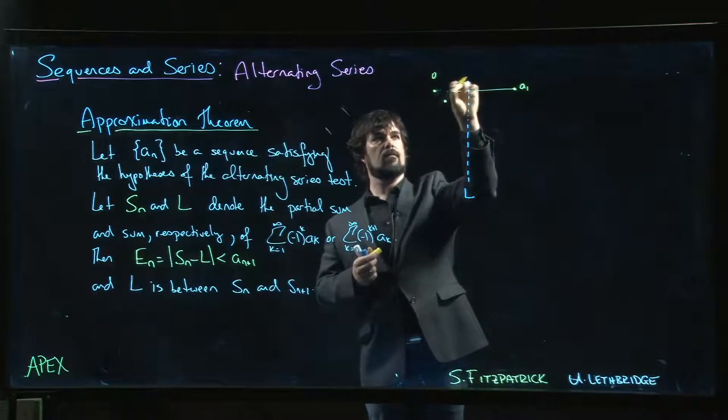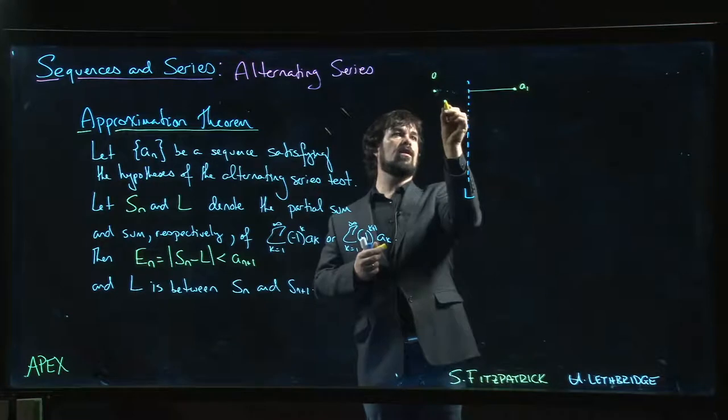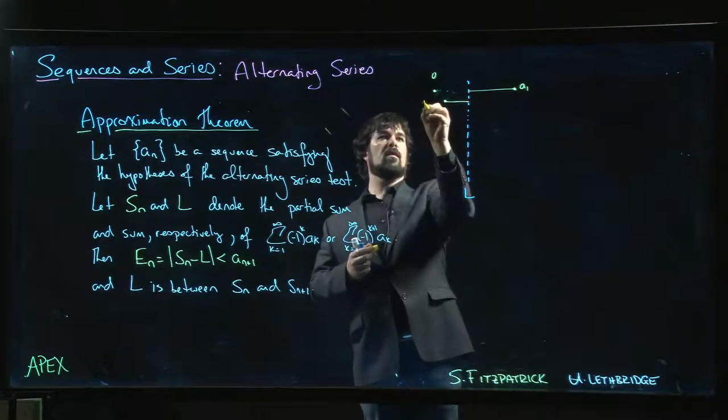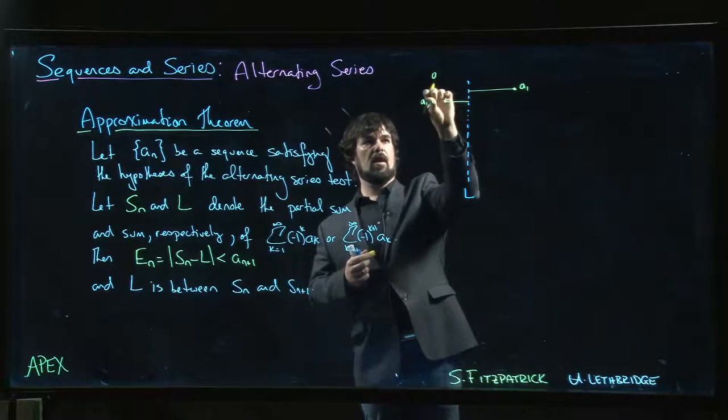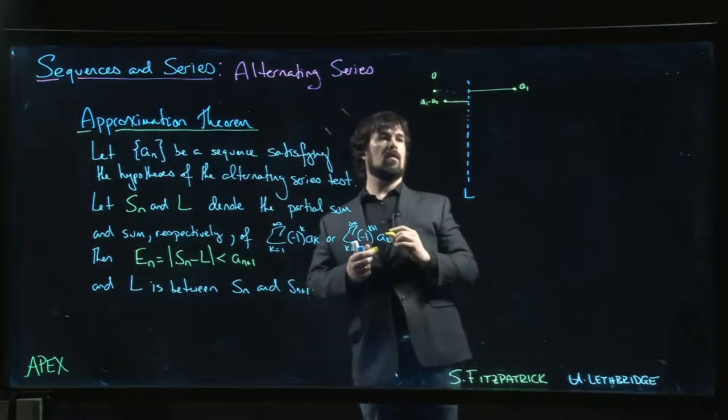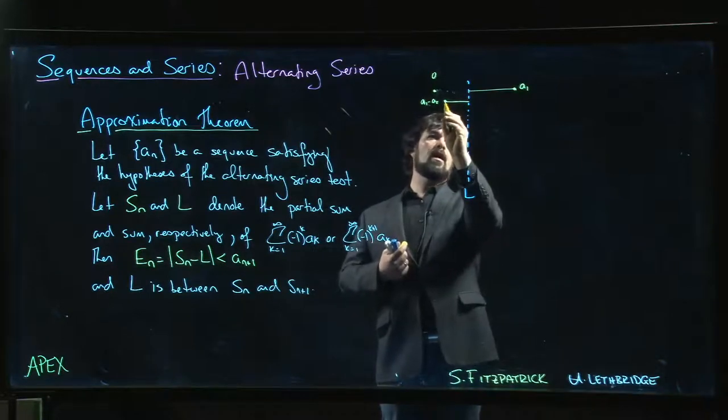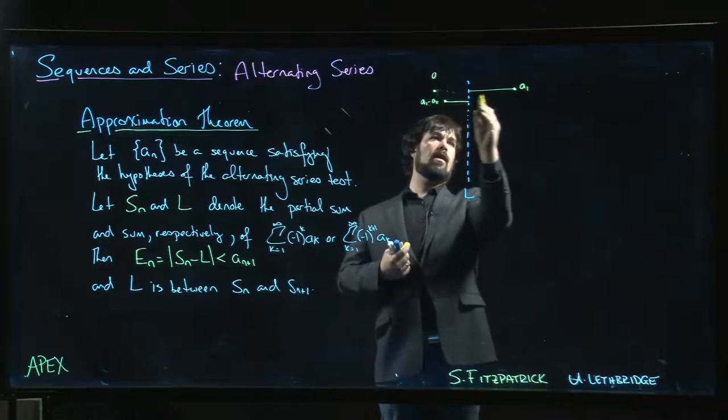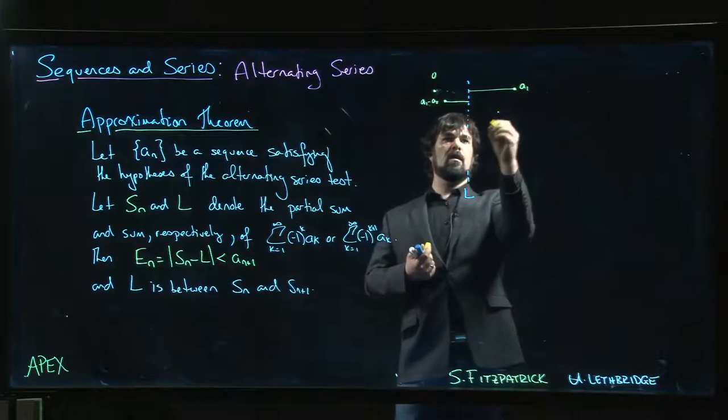So a2 gets you to here. There's a1 minus a2. And then you add on a3. You add a3 on to here, and because a3 is smaller than a2, it's not going to get you all the way back to a1. It's going to get you maybe to here.